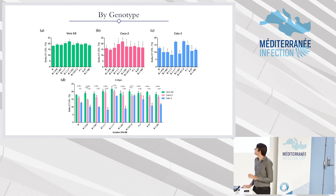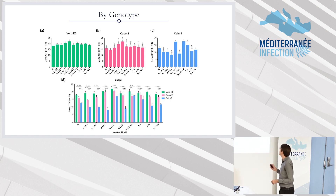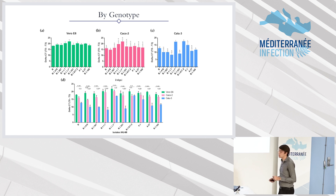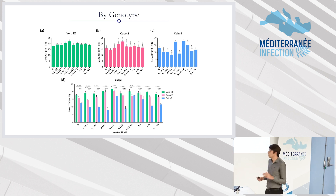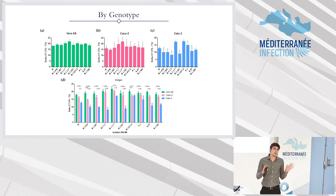But we can see some difference for Caco-2 for Alpha, and in Calo-3 there is decreased replication in Alpha and thickness, except for one isolate that's totally different, and for Beta. But we have increased replication for Delta and Gamma.